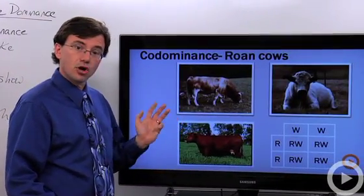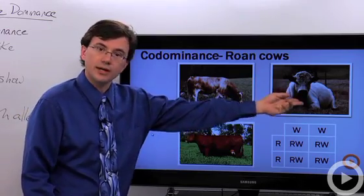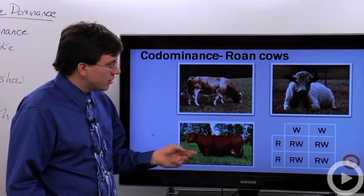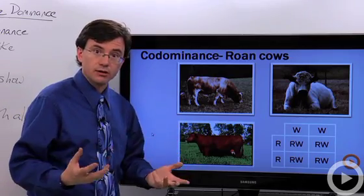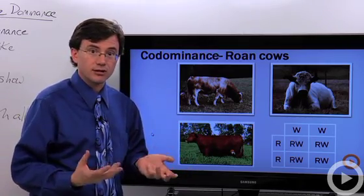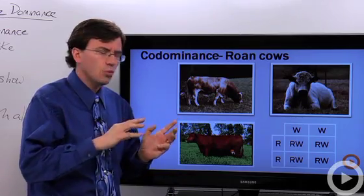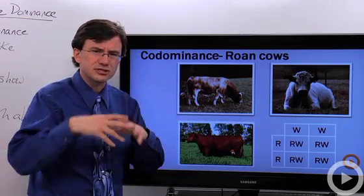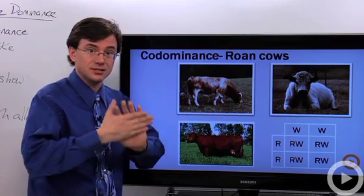The standard example of codominance is what's known as a roan cow. There are kinds of cows that are white and kinds of cows that are red. A red cow has big R, big R for the hair color allele. The white cow has big W, big W for the hair color allele. Now you may be thinking: why are two different capital letters being used? You're supposed to use all the same letter. That's because both of these are dominant alleles.